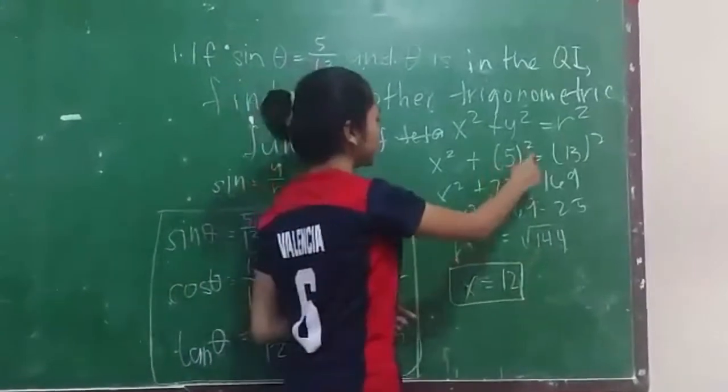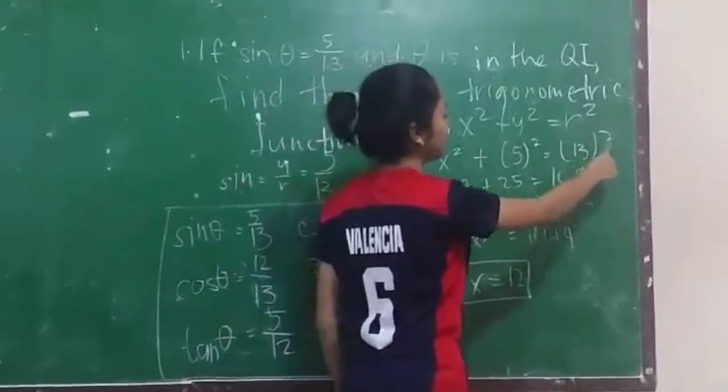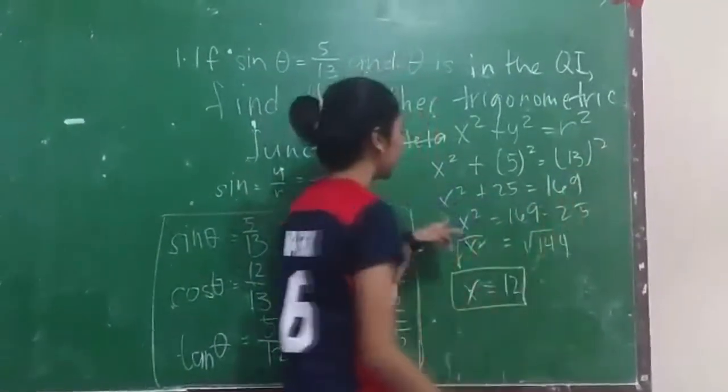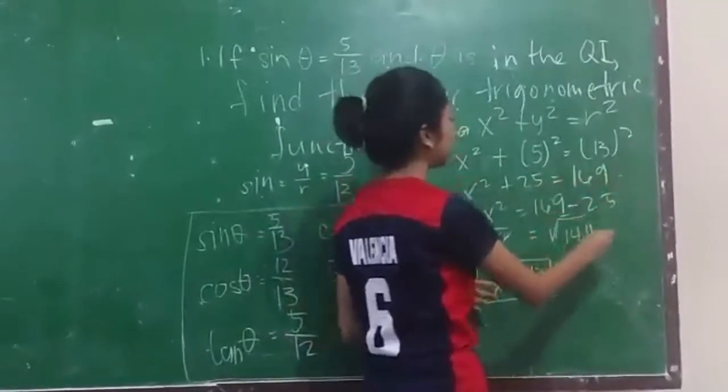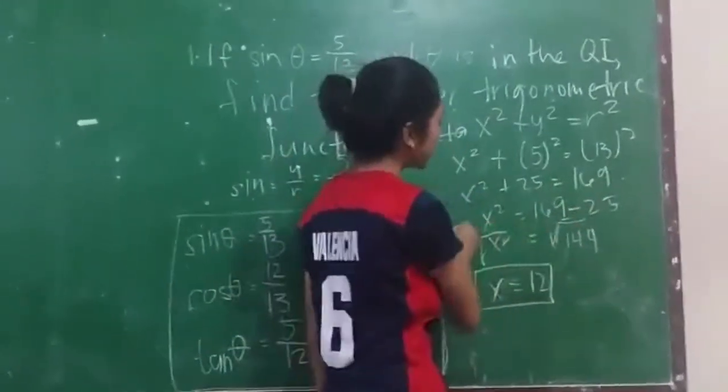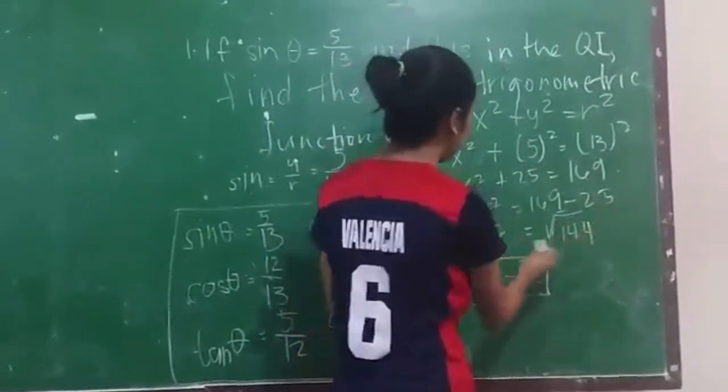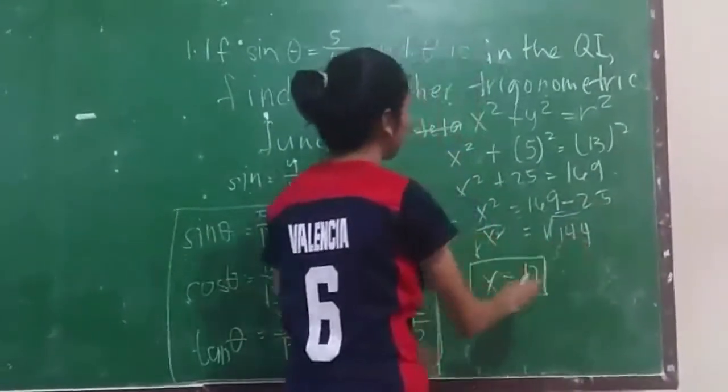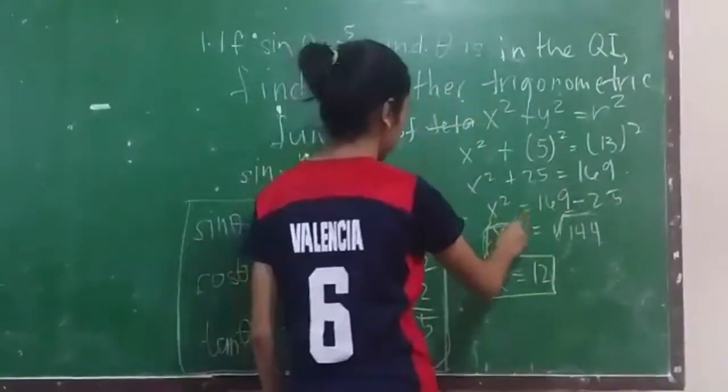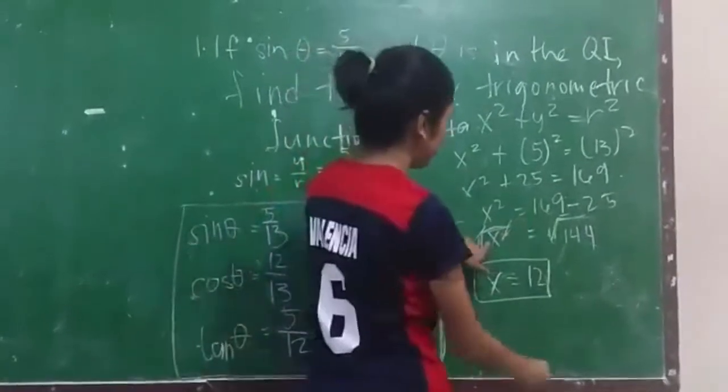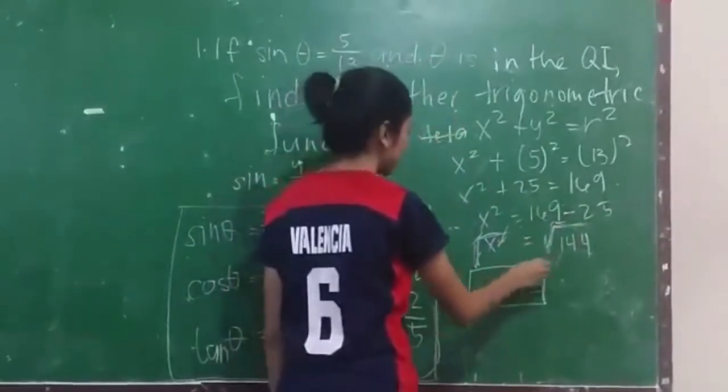Then we'll solve. 5 squared is equal to 25. And 13 squared is equal to 169. We'll transpose 25 beside 169 and change the sign to negative. x squared is equal to 169 minus 25, that equals 144. Then we'll square root both sides. Square root of 144, and the answer is x equals 12.